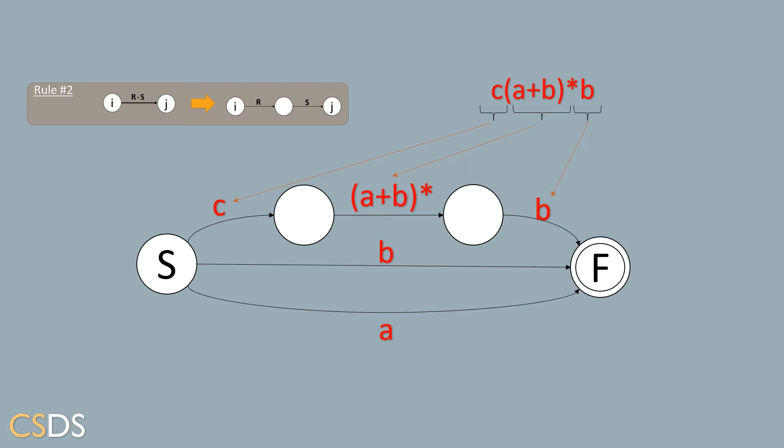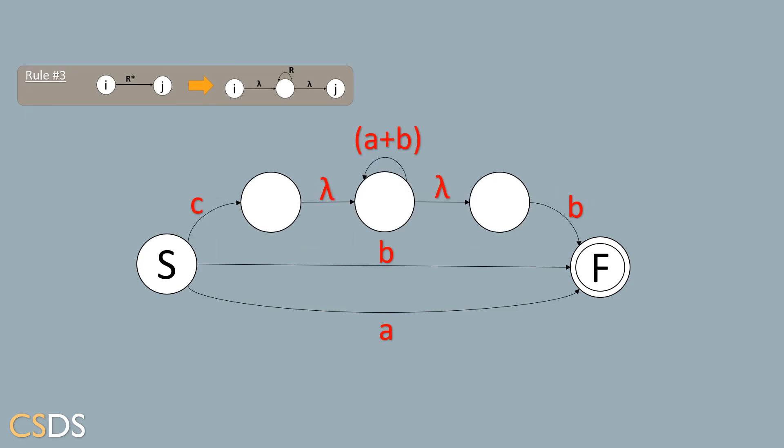And we will now continue to rule number three in order to break down the a plus b star expression. So after using rule number three, we converted a transition of a plus b star to two lambda transitions separated by a new state with a self-transition of a plus b.